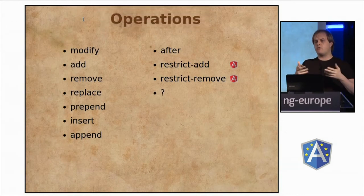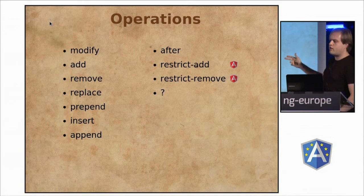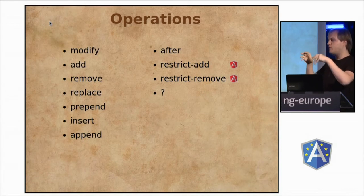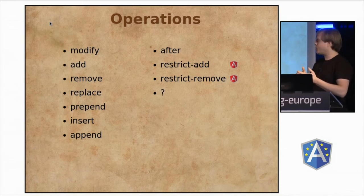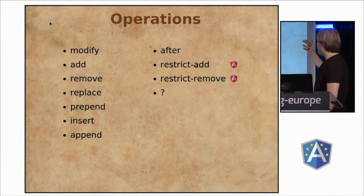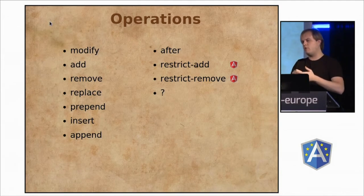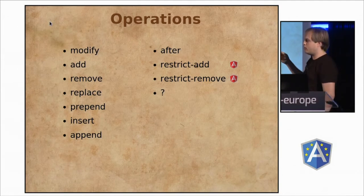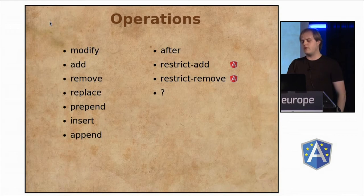Deltas have operations that they can perform on these values. A couple of very simple ones are: modify, add, remove, replace. If you're talking about an object, you can add properties and modify an object to go deeper. Prepend, insert, and append — they work on arrays and functions. There are also specialized operations, and you can create custom operations as well. The 'after' operation takes into account that a function might return a promise, and it will wait for the promise to be resolved before firing the new function you provide. I also came up with two silly Angular-specific operations where you can add a restrict directive or remove one.